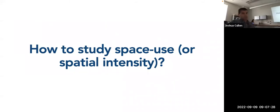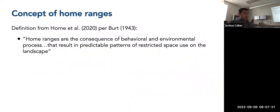So how to actually study space use or spatial intensity. To start off, I'd like to discuss the concept of home ranges. There's a lot of different terminology in the literature, and a lot of times things are used interchangeably. So I'd like to try to provide some more clear cut definitions as to how these terms are generally being used by people that conduct work more frequently in this field. So there's a book chapter by Horne and colleagues from a couple years ago taking a basic definition originally defined like 80 years ago by Burt. They define home ranges as the consequence of behavioral and environmental process that results in predictable patterns of restricted space use on the landscape.